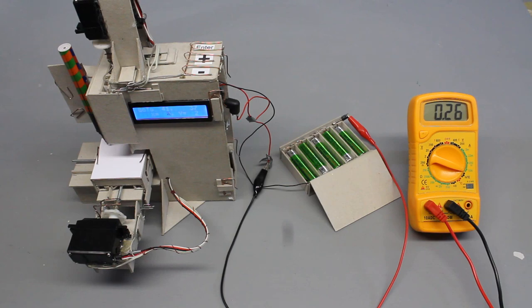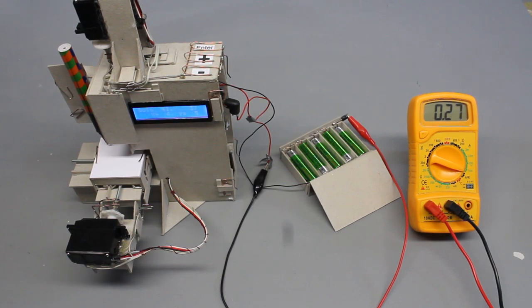When running, the CNC draws a current of up to 300mA, but rather 2000mAh batteries should be able to operate this machine for some hours.